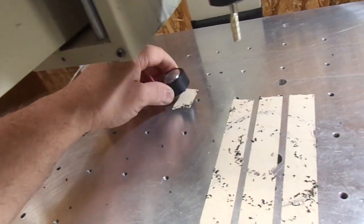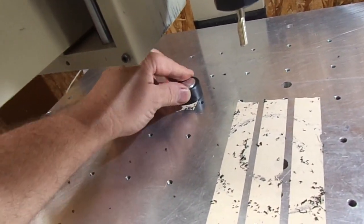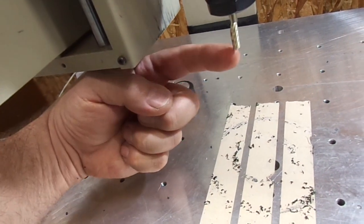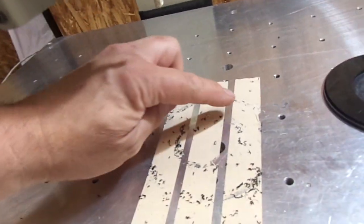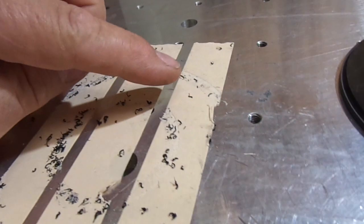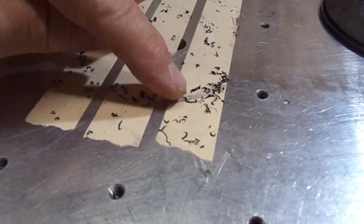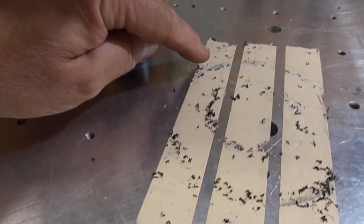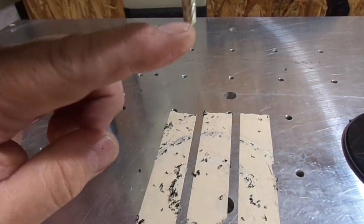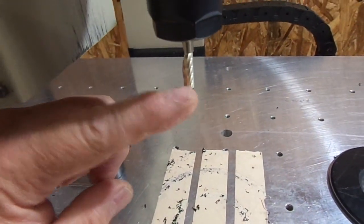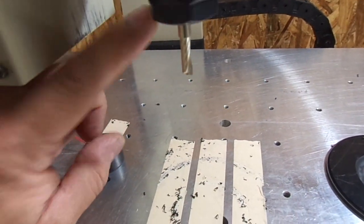I actually set this on top of a piece of double stick tape, so that when the bit thinks it's at Z0, it's actually just grazing the top of the tape. And you can see how it just grazed the top. It did not cut through the tape. That's what you want. If you actually cut through the tape, you'll start gumming up the bit and your cut quality will suffer.